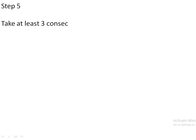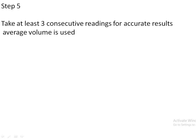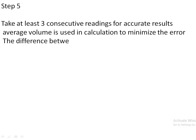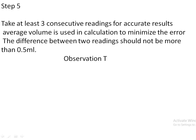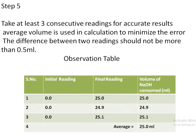Step 5: take at least 3 consecutive readings for accurate results. The average volume is used in the calculation to minimize error. The difference between any two readings should not be more than 0.5 ml. In the observation table, the initial reading is taken as 0 and the final reading comes out to approximately 25 ml, 25.1 ml, or 24.9 ml; then we take the average volume of NaOH consumed.